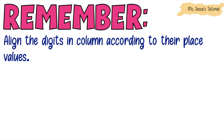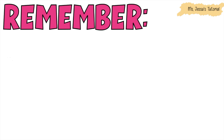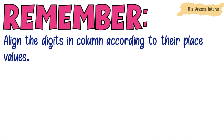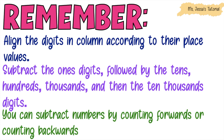Always remember, children, in subtracting numbers, you must align the digits in column according to their place values. You're going to start subtracting from the ones digit, followed by the tens, hundreds, thousands, and ten-thousands digits. And lastly, you can subtract numbers by counting forwards or counting backwards.